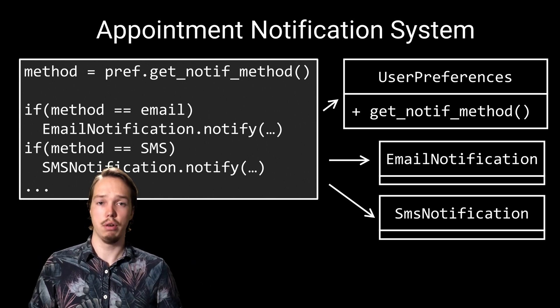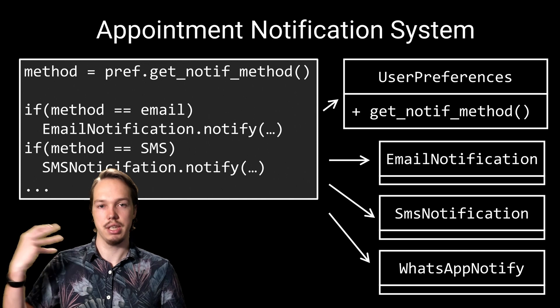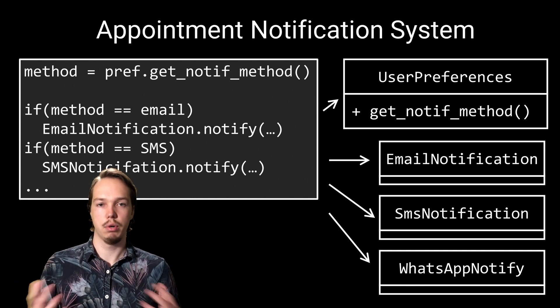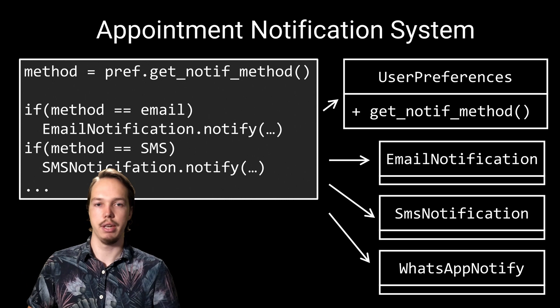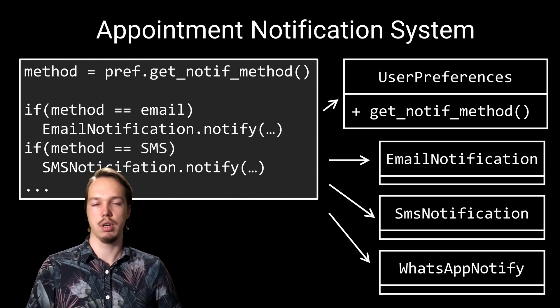If we want to add a new notification service — say we want to start supporting WhatsApp messages — then we now need to make changes in our business logic. In other words, because our business logic is directly dependent on these concrete classes, it is impacted by changes in those classes. In general, in good software design, you want to protect the business logic — the high-level policies of the system — against changes in the lower-level peripheral components. This is especially important when those components are third-party components which you do not have direct control over.